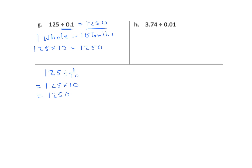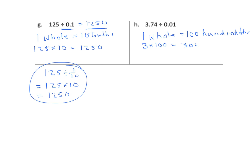Next, we have three and seventy-four hundredths divided by one-hundredth. One whole equals one hundred hundredths, so three wholes gives three hundred hundredths. Then seven-tenths equals seventy hundredths, and four hundredths is four. So we have three hundred seventy-four hundredths total. Three and seventy-four hundredths divided by one-hundredth, where each unit has one hundred hundredths, gives three and seventy-four hundredths times one hundred.